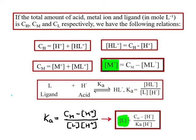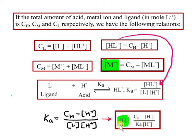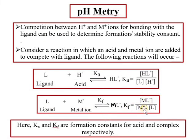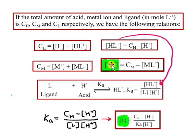We substitute the HL+ value into the equation. The concentration of HL+ is CH minus H+. This gives us the concentration of L. We need KA, the formation constant of acid. For the metal complex formation constant, it is concentration of ML+ upon concentration of M+ times concentration of L. So we need the values of ML+, M+, and L.